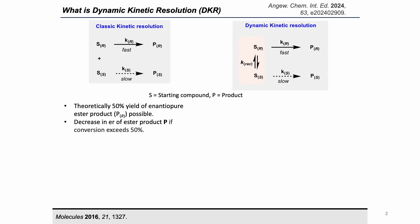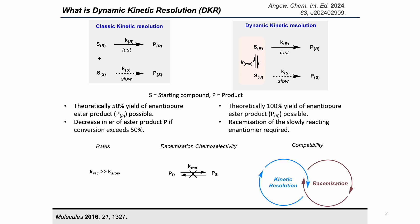In dynamic kinetic resolution (DKR), there is an additional factor: racemization, which is the interconversion equilibrium between the two enantiomers. In DKR, the fast-reacting enantiomer produces the final product, while simultaneously the slow-reacting enantiomer racemizes to become the fast-reacting enantiomer, allowing for complete conversion and 100% yield of the enantiopure product. The rate of racemization should be significantly faster than the rate of reaction of the slow-reacting enantiomer, the final product should not racemize under the reaction conditions, and there must be compatibility between racemization and kinetic resolution.